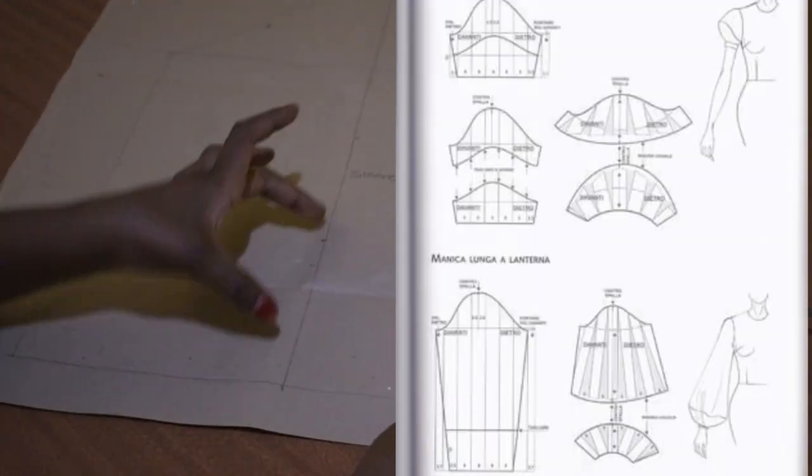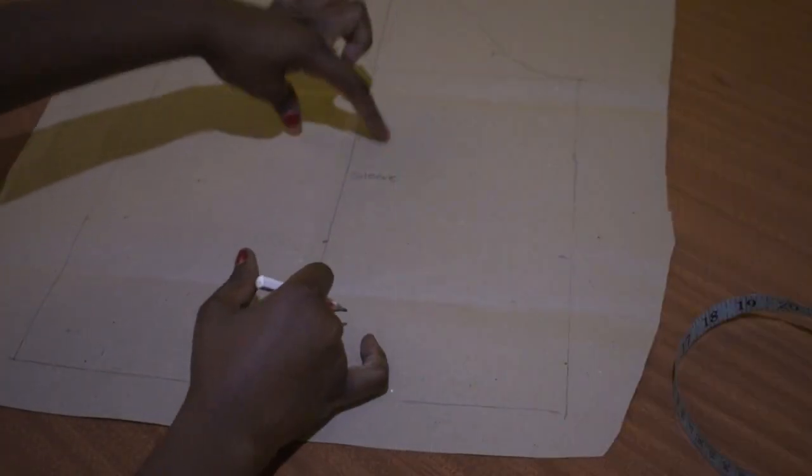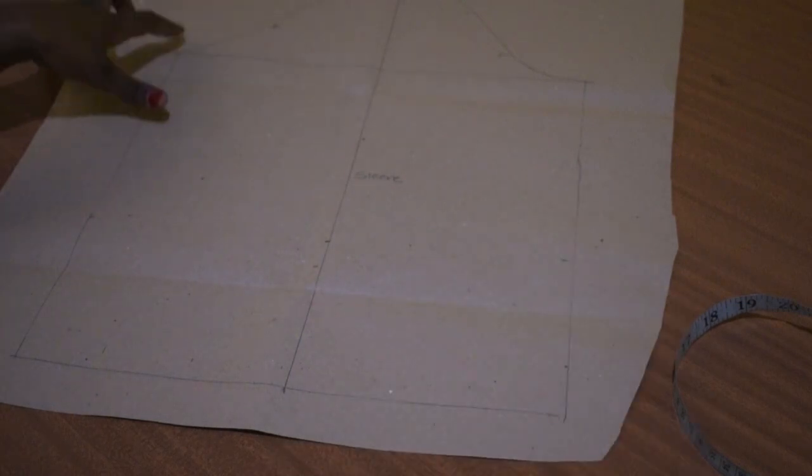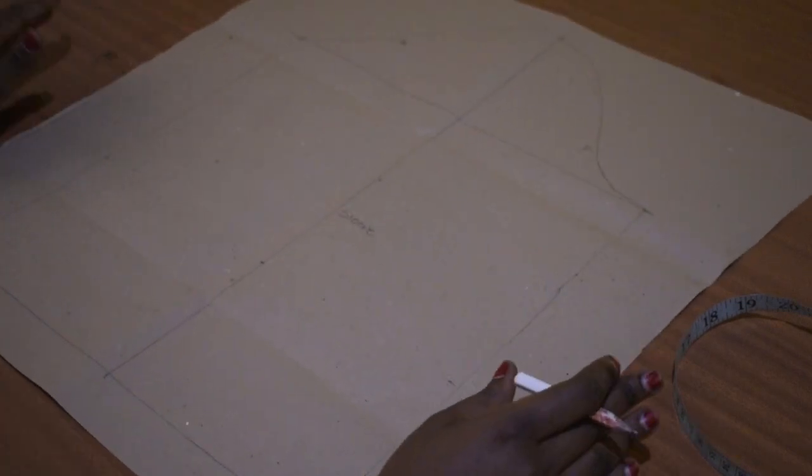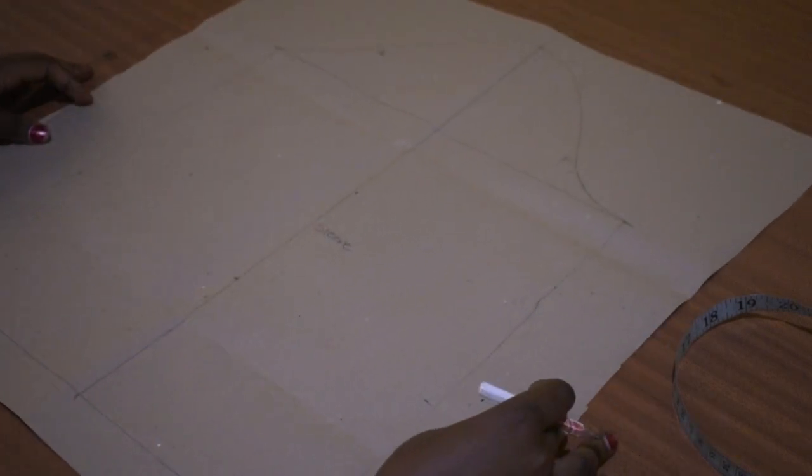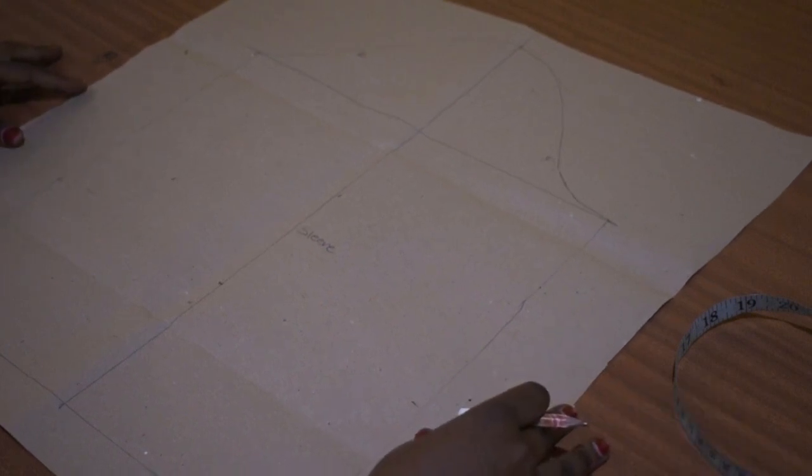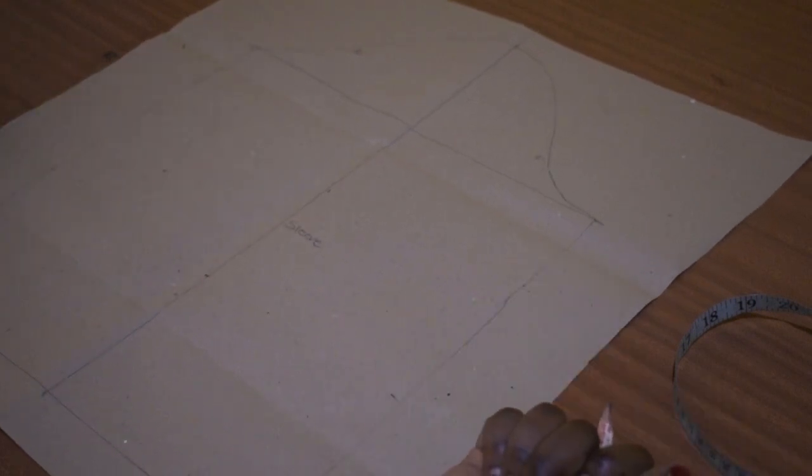The lantern sleeve has a lower piece that's open that joins this other sleeve that's also open. But I'm going to show you. So you start by tracing the block of the sleeve, the sleeve block in short. I have a video on how to make a sleeve block if you don't know how to. You can check that video out.